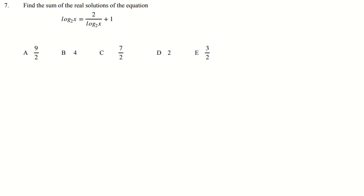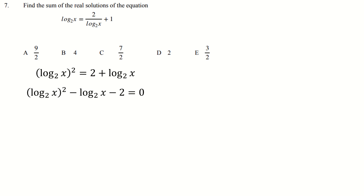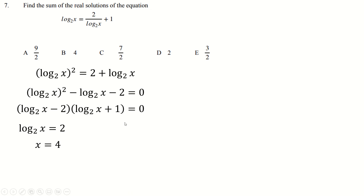Classic question here — you just times both sides by log to base 2 of x to make a quadratic, which you rearrange to make 0. Couldn't even be bothered to make a substitution — just straight up factorize it; it's not too difficult. Logs can be negative of course, so we have two solutions to solve. 2 to the power minus 1 is a half, which is where that comes from. 2 to the 2 is 4, and the sum of those two solutions is 4 and a half, which is 9 over 2.